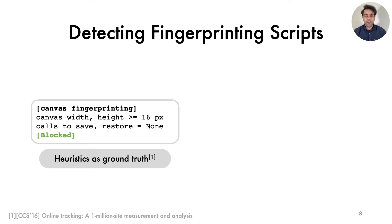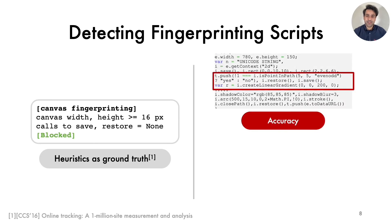To address that problem, prior research has proposed to detect browser fingerprinting scripts automatically with heuristics. These heuristics are manually crafted and require the presence of certain APIs with specific parameters in the execution traces of scripts. However, these heuristics have two key limitations. First, they are narrowly defined, which means they will detect scripts that strictly match their criteria, but miss scripts that even slightly differ. For instance, a canvas fingerprinting script will not be detected because it calls save and restore methods, and the heuristics are designed to look for their absence.